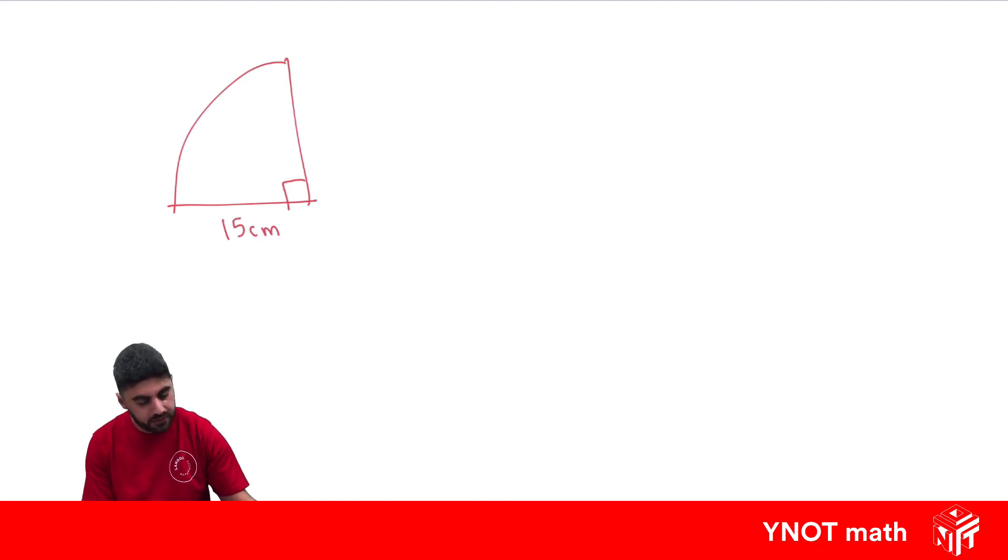So here we have a sector, that's the centre of the circle and we only have this part here. So how do we find the area? There's two ways we can do it. One is, if you know that it's a quarter of a circle already,